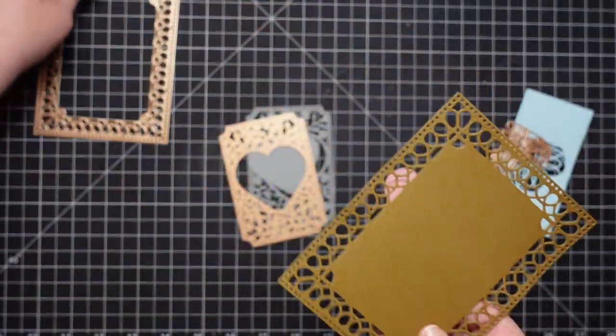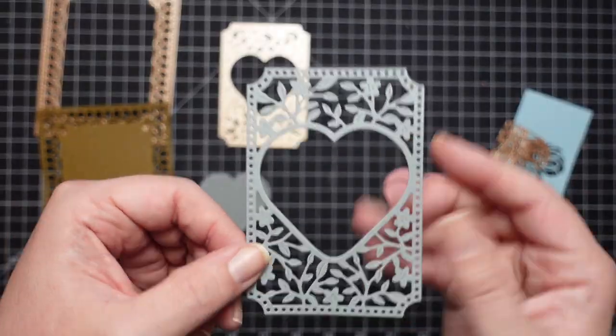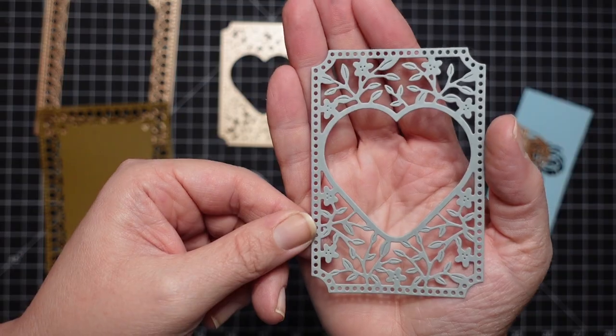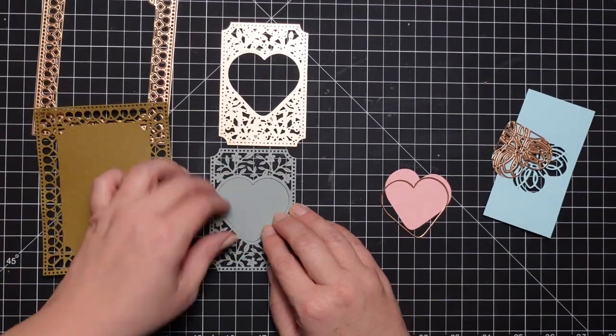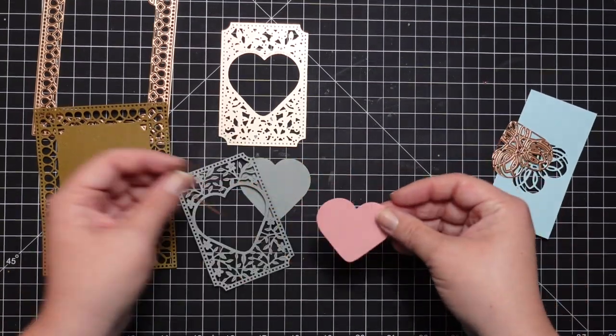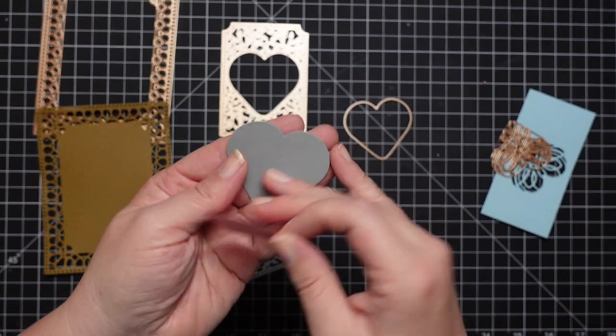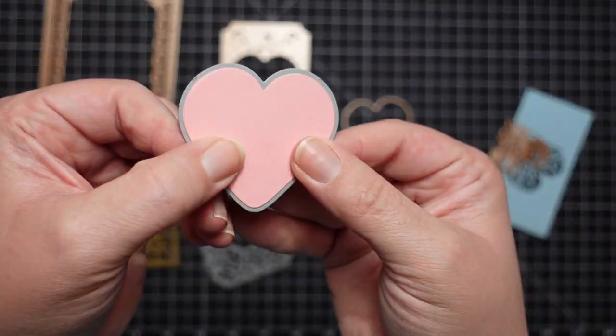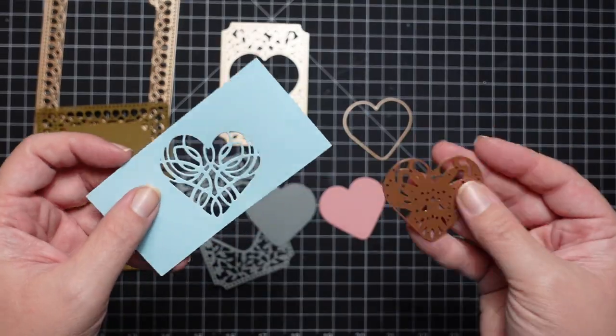Anyway, so here is if you just use the large die, that's what you get. This is the heart die. So that cuts out that piece, really pretty. And then of course you can use that inside heart to stick back in or use it by itself if you want.